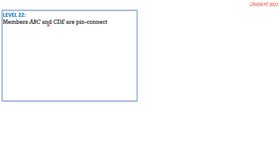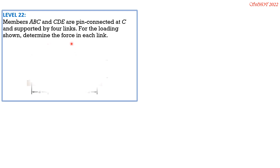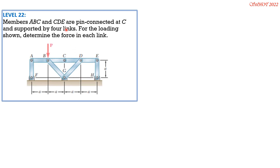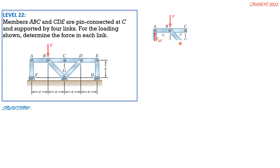Members ABC and CD are pin connected at C and supported by four links. For the loading shown, determine the force in each link. Drawing the FBD: AF, BG, and DG are two-force bodies — they are short links with no load in between and smooth pins. For the FBD of portion ABC, we assume F_AF in compression, F_BC in compression, and two component reactions at C.